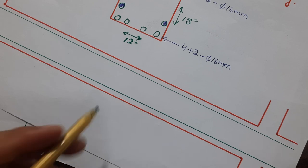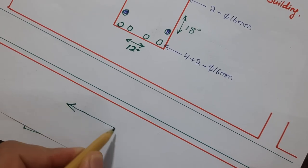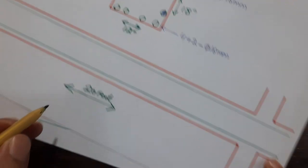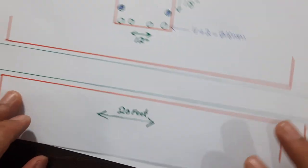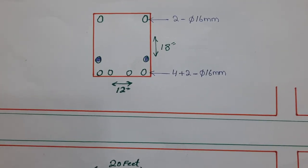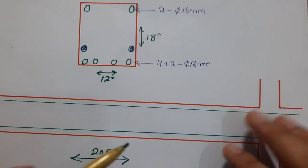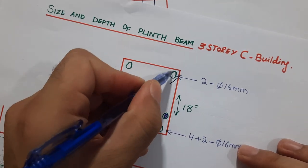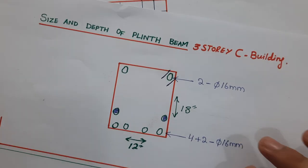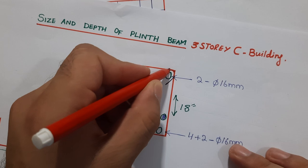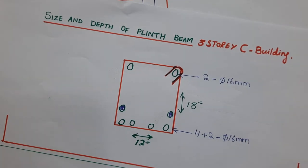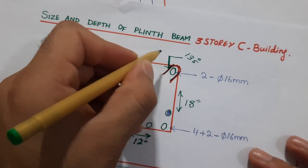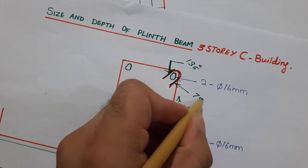Looking at the long section, the span between two columns is 20 feet. This is one column and this is the other column. Now let me guide you for the long section details. Hooks should be bent at 135 degrees, as shown here. The length of the hook should not be less than 75 millimeters.